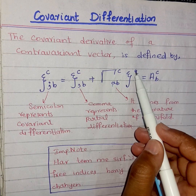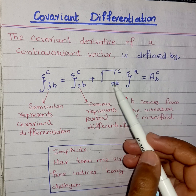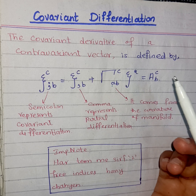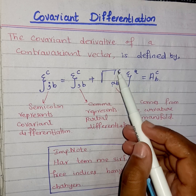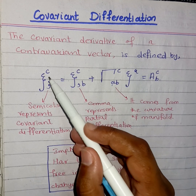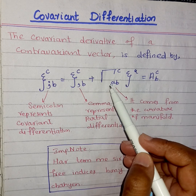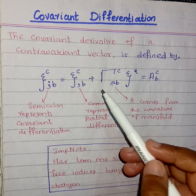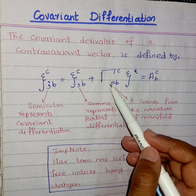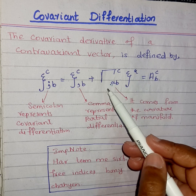We replace this with a dummy variable. I'm writing 'a' as the dummy index here — you can also write d, e, or any other letter. So gamma^c_ab: the b stays as is, and 'a' comes from the dummy index, meaning these two will be the same — one in covariant form and one in contravariant form.